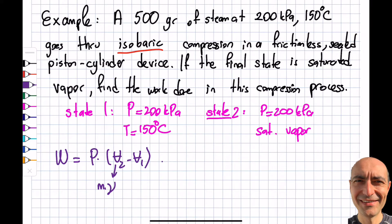This is M times specific volume. P is constant, so I can take M out of the parentheses and get specific volume 2 minus specific volume 1. M is known, this is 200,000, this is 0.5, so I know those but I don't know these two.